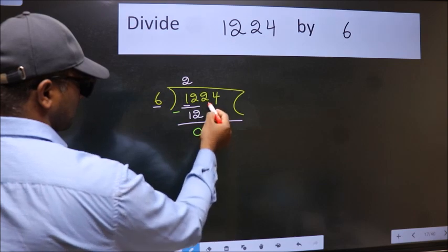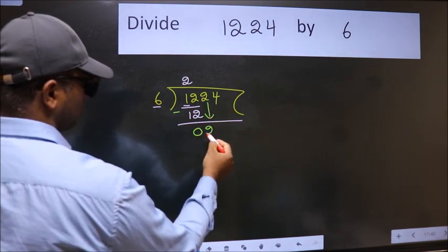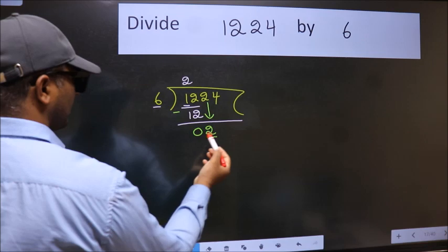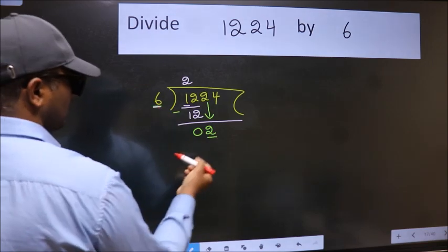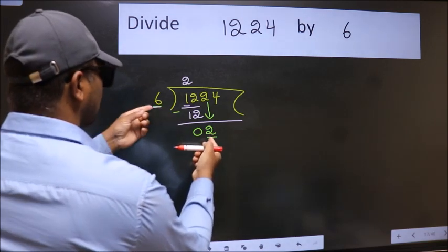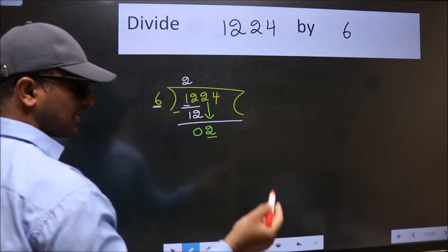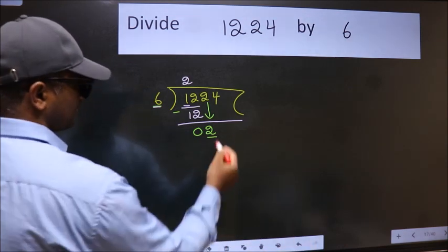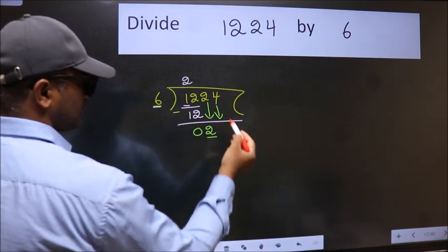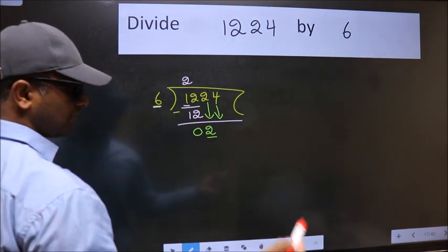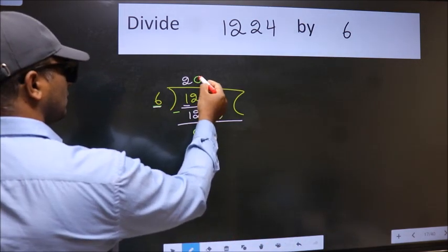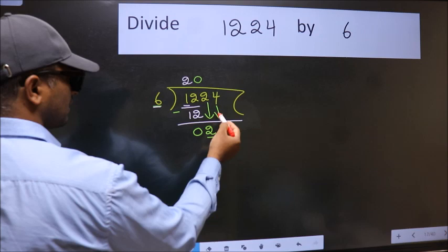After this, bring down the beside number. So, 2 down. Now, here we have 2 and here 6. 2 is smaller than 6, so we should bring down the second number. And the rule to bring down the second number is put 0 here. Then only we can bring this number down.